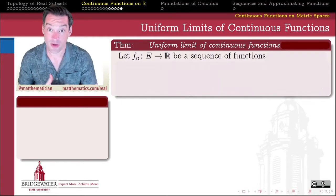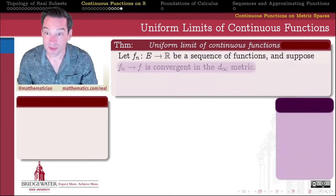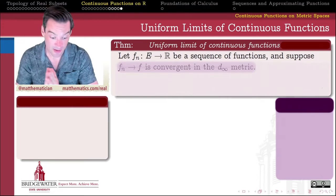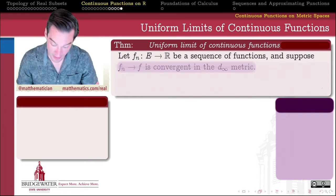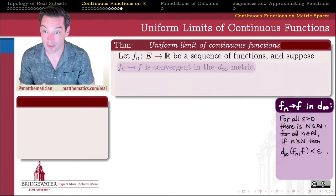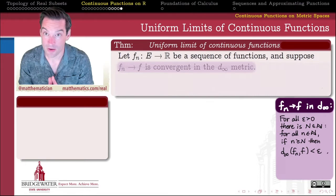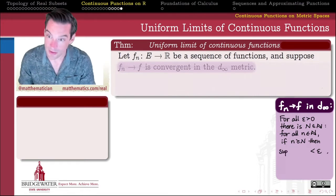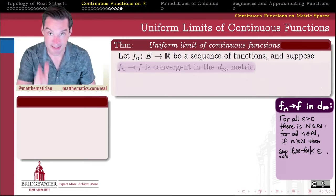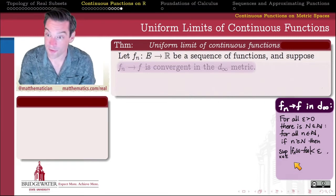We start with a sequence of functions — let's call them F sub n — all having a common domain E. Suppose this sequence converges in the D-infinity metric. To converge in the D-infinity metric means that for all epsilon greater than zero, we can find a natural number capital N such that for all little n greater than or equal to capital N, the uniform distance from F sub n to F is less than epsilon. The uniform distance between two functions is the supremum of the absolute value of the difference of F_n(x) and F(x), where x ranges over the entire domain.